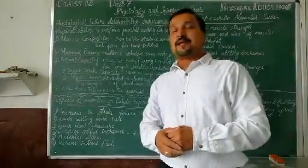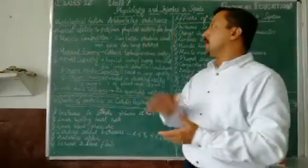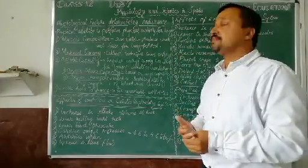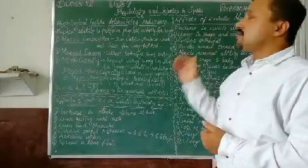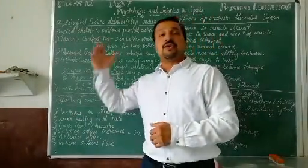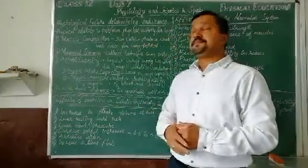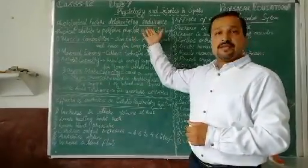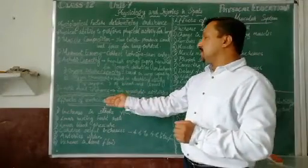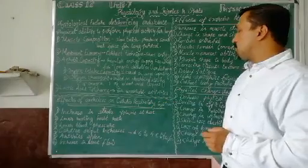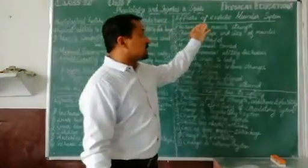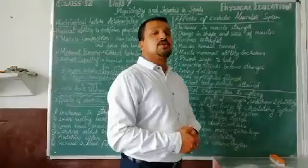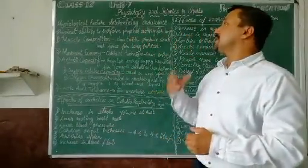Good morning students, welcome back to Physical Education class of Class 12. Today we continue the remaining portions from Unit 7: Physiology and Injuries in Sports. In the last two classes we discussed physiological factors determining strength, flexibility, and speed. Now the fourth one is endurance, and we also need to cover effects of exercise on the cardio-respiratory system, effects on the muscular system, and physical changes due to aging.